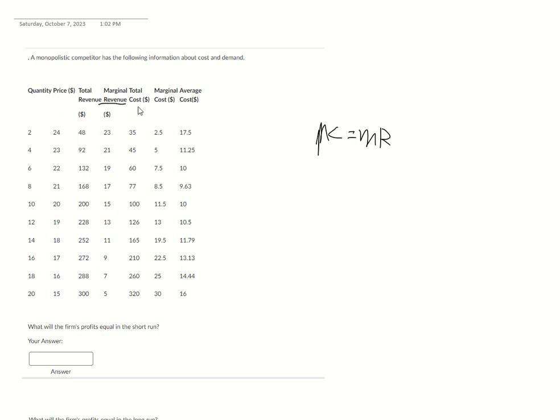that is where profit is maximized. So the profit for this company will be $228 minus $126, and the answer is $102. That's the firm's profit in the short run.